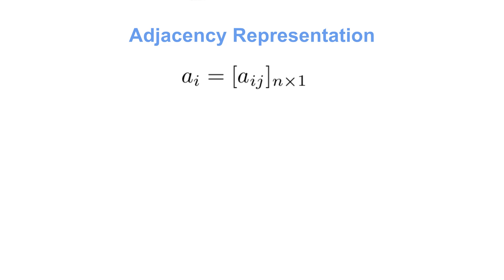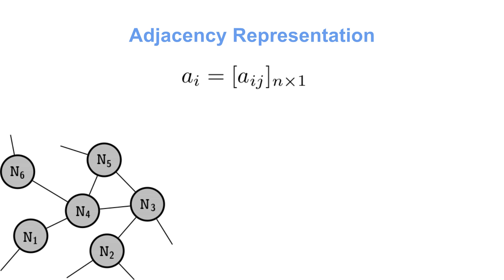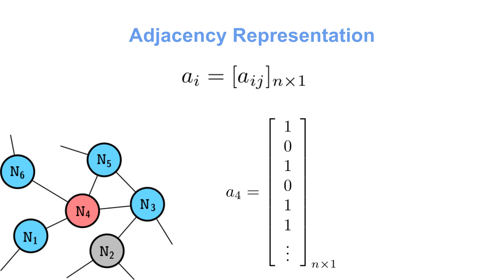Based on the adjacency information, nodes in a network are conventionally represented using adjacency representation. Here, Ai is an n-dimensional vector where n is the number of nodes in the network. The j-th entry of Ai gives information about the relationship of the i-th node with the j-th node. For a binary weighted graph, this is either 1 or 0 depending on whether the edge is present or absent. In the case of real weighted graphs, it carries the weight of the edge if the edge is present, and is 0 otherwise.